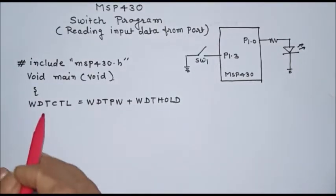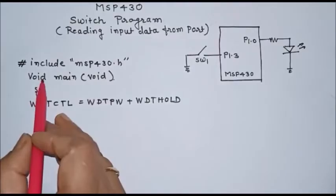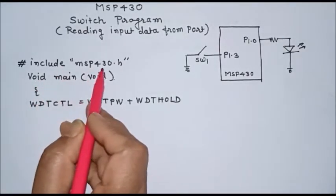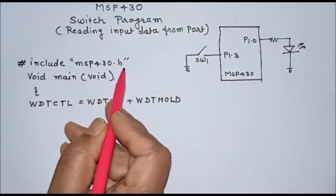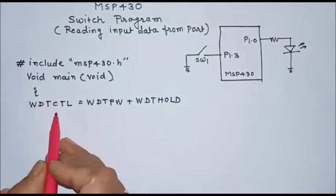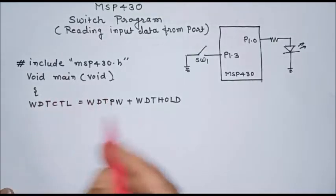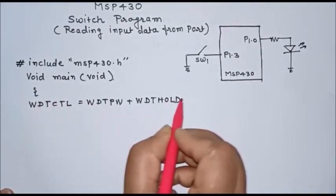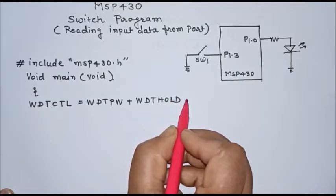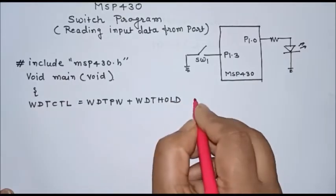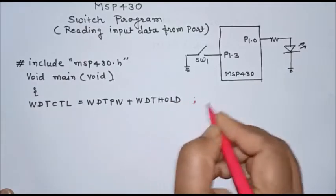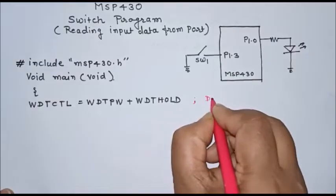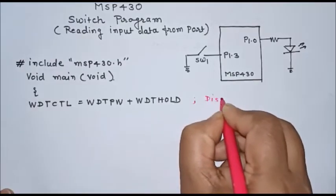First, while writing a program, we have to include MSP430.h and then write the program in main. This instruction is required for each and every program — to turn the watchdog timer off, or disable the watchdog timer.